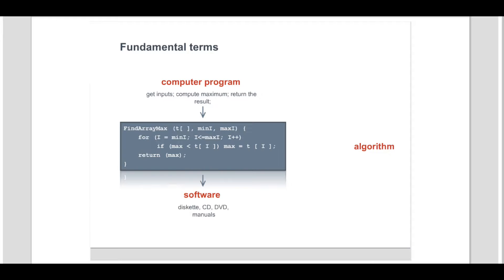The term algorithm can be defined as a systematic procedure for accomplishing a task in a finite number of steps. In the context of computers, the term algorithm is often used with respect to a set of ordered steps for solving a problem or providing an output from a specific set of inputs. In this context, an algorithm describes the concept underlying a computer program.